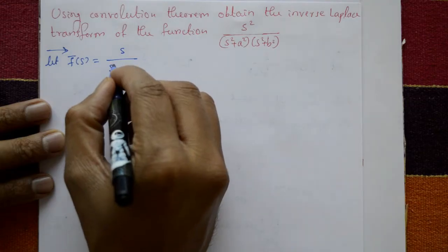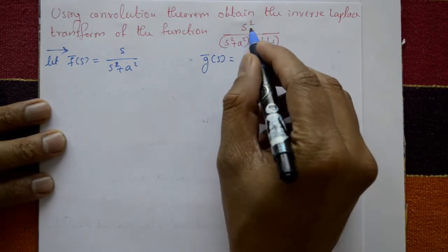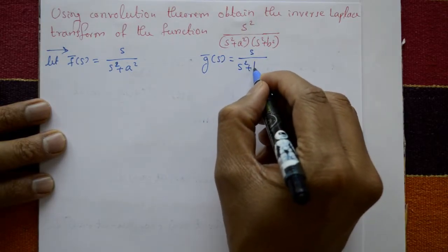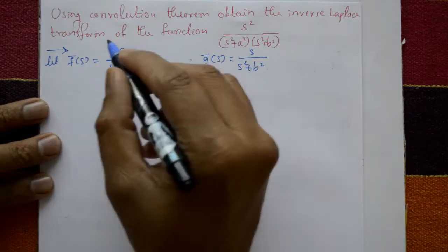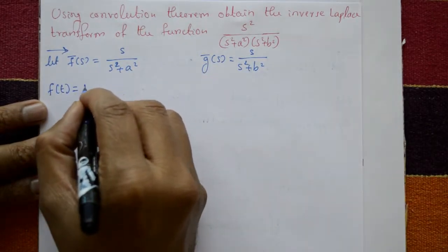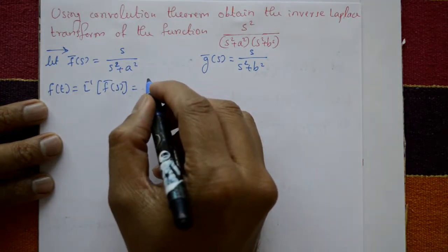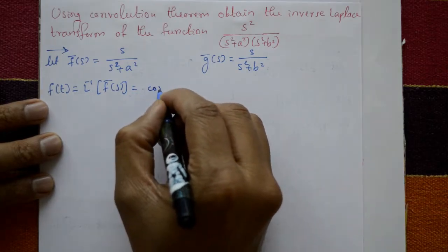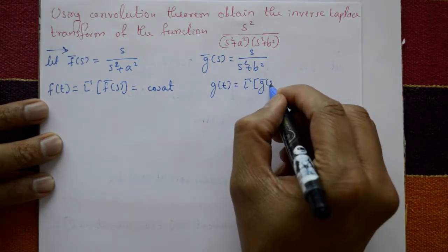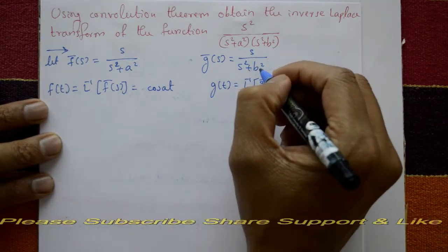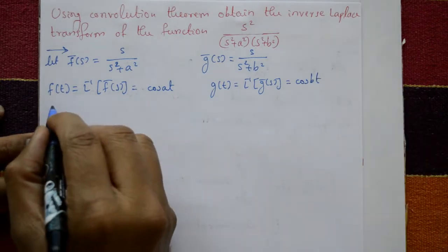Let F̄(s) = s/(s²+a²) and Ḡ(s) = s/(s²+b²). Now we require f(t) and g(t). f(t) is the inverse of F̄(s); the inverse of s/(s²+a²) is cos(at) using the standard function. And g(t) is the inverse of Ḡ(s); the inverse of s/(s²+b²) is cos(bt) using the standard function.